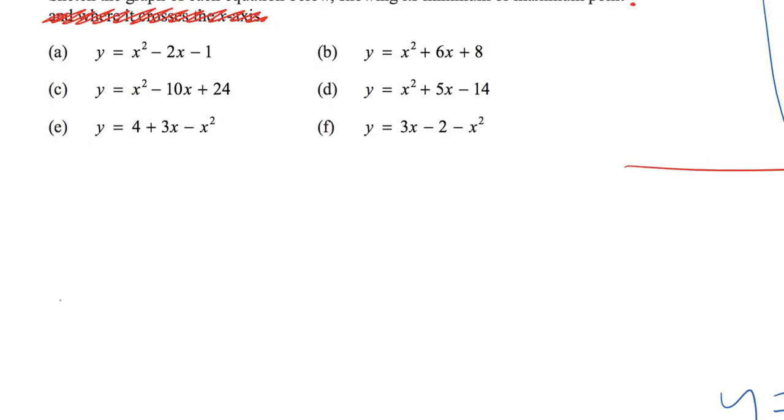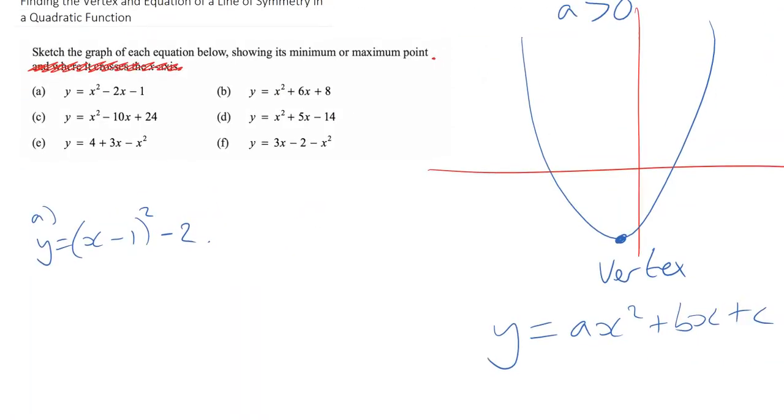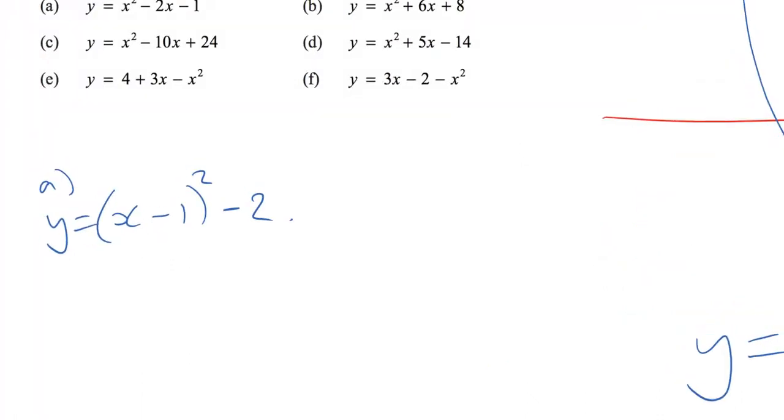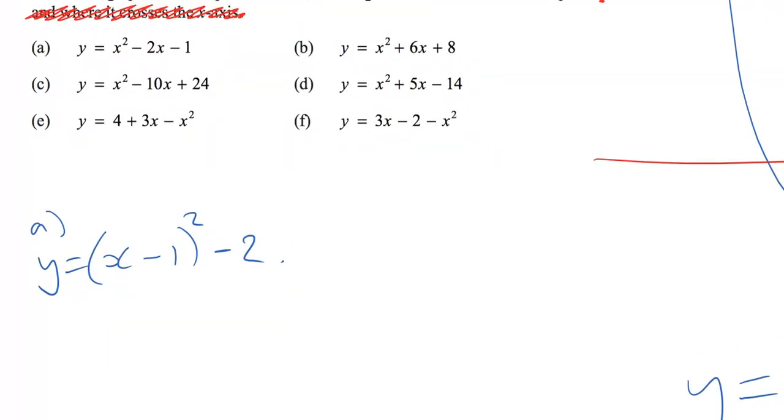So we could write a as x minus 1 all squared. Now if that is then squared, I would get a positive 1 as my coefficient. And so I would need to take away 2. So x squared minus 2x minus 1 written in completed squared form is y equals x minus 1 all squared minus 2. Next thing to worry about. Well, this tells me something. This tells me lots of things, in fact.